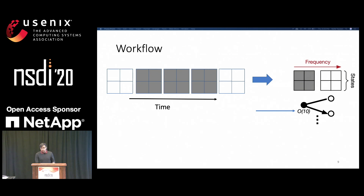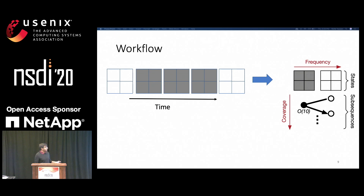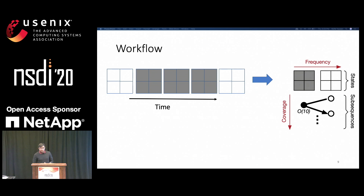We call these changes of states subsequences that represent a subsequence of the network trace that we collected. We sort the subsequences by coverage so we can see which ones are the most important. Together, these states and subsequences represent a network profile that shows us traffic patterns. The way to read this graph would be: the network started at no utilization, then went to high utilization for tens of seconds, and then came back to no utilization.